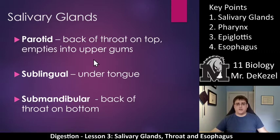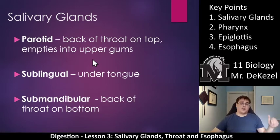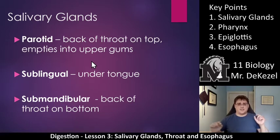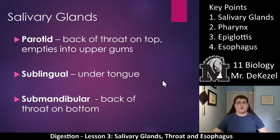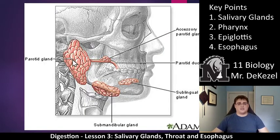You can see them on your diagram in your notes. So pause on the screen so you can copy this down. The parotid gland is in the back of the throat on top and it empties into the upper gum. So the gland is in the back of your mouth and it empties up and keeps your upper gums moist — that would be the parotid gland.